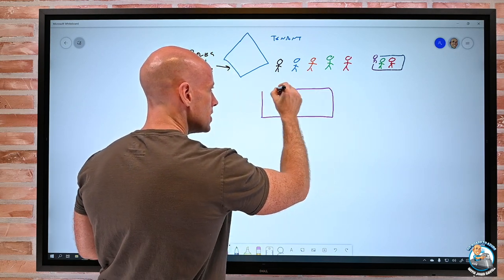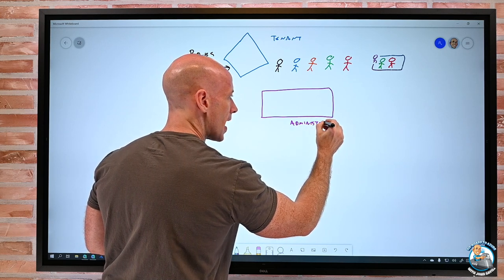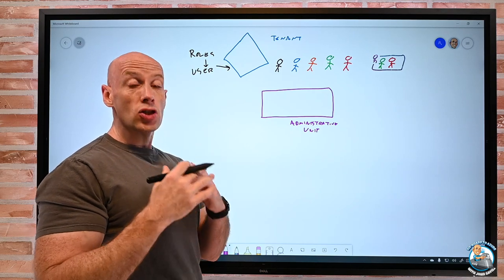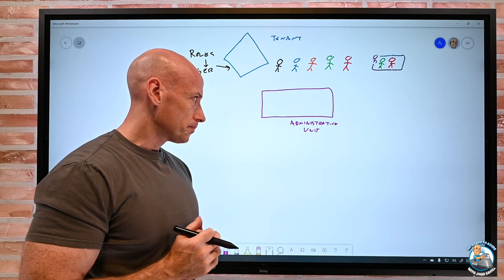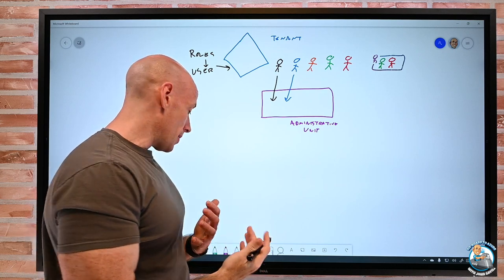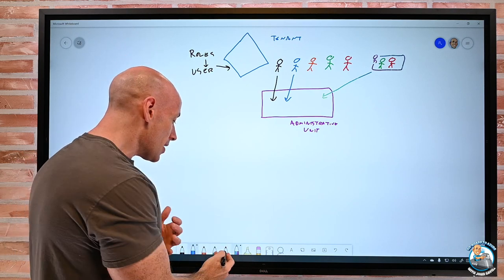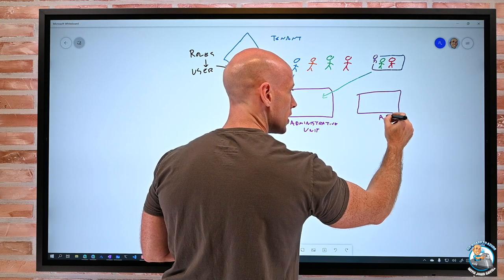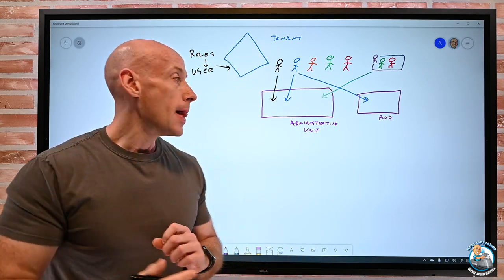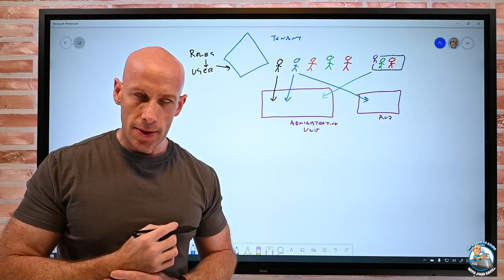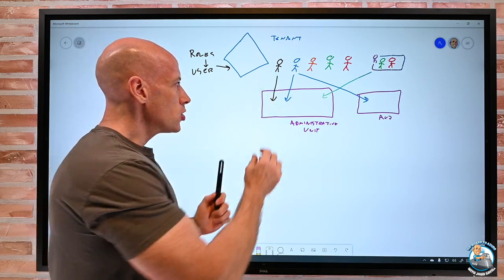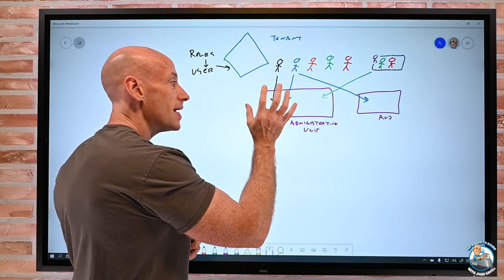So, I can now create this administrative unit in Azure Active Directory. Now, to create an administrative unit, I have to be a global administrator or a privileged role administrator. And then, what I can do is I can essentially add users into that administrative unit. I can even add groups into that administrative unit. Now, I can have many administrative units. I could have another AU, and I could have the same user added to a different AU. So, it's not a structure. I can have the same user in many different administrative units. I cannot nest them.